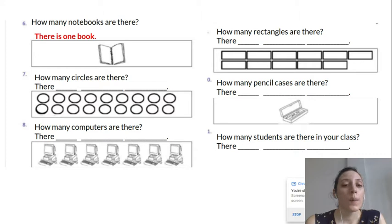How many circles are there? Oh, there's a lot here. One, two, three, four, five, six, seven, eight, nine, 10, 11, 12, 13, 14, 15, 16, 17, 18. So we need to say, there are 18 circles.